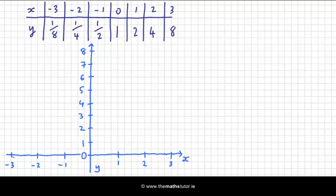When x is minus 3, we got 1 eighth. 1 eighth is, there's a half, it's very, very small, it's just down here somewhere. Let's try and do our dot as big as possible. When x is minus 2, we get a quarter, which is here.